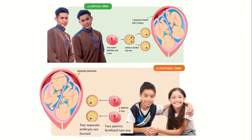Looking at the figure, identical twins are formed from one sperm that fertilizes one ovum. This forms one embryo, and this embryo will split into two and develop to form two fetuses. They share one placenta.